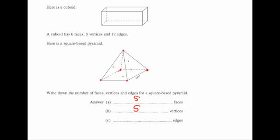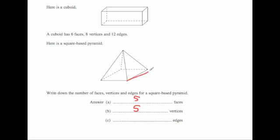Now let's count the edges. For the edges you would have one, two, three, four edges on the bottom, and then you would have four leading up to the top. So that would be eight altogether — eight edges for a square base pyramid. So a square base pyramid has five faces, five vertices and eight edges.